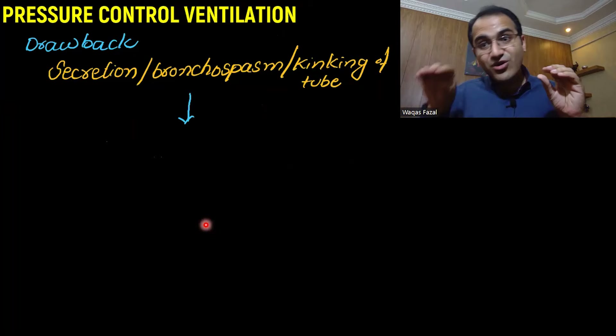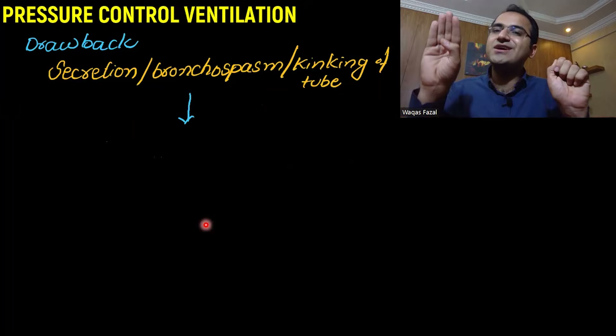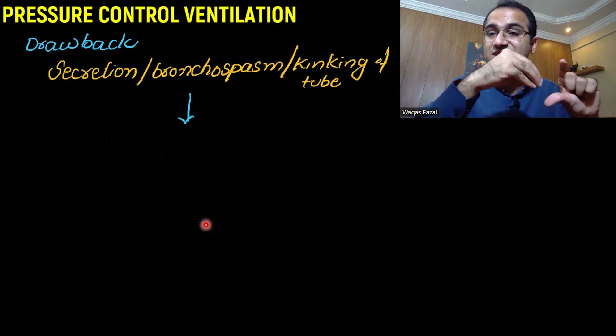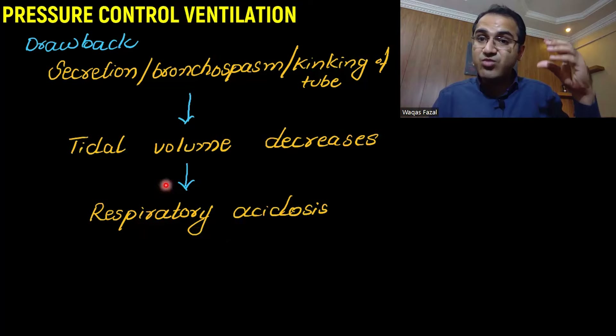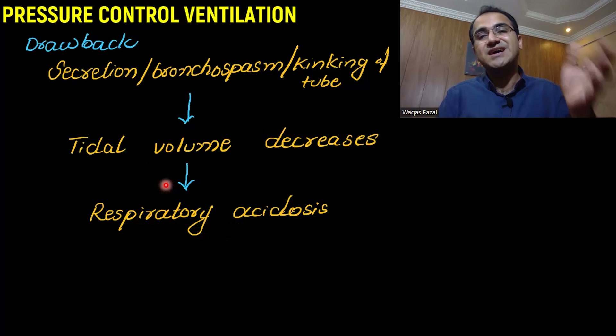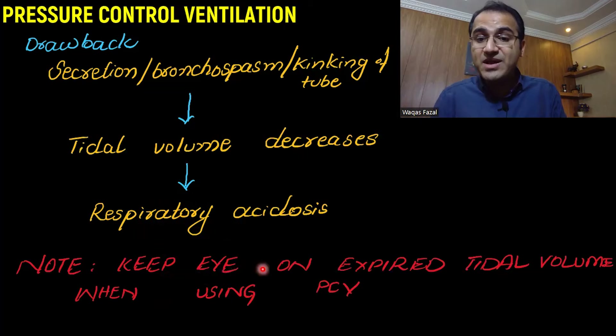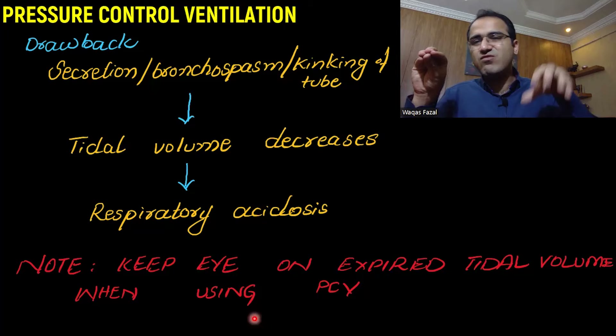The drawback of pressure control mode: if the patient develops secretions, bronchospasm, or kinking of the tube, since the pressure is locked, it cannot increase. Therefore, the volume delivered to the lungs will be less, and the patient will develop respiratory acidosis. So when using pressure controlled ventilation, always monitor the expired tidal volume closely.